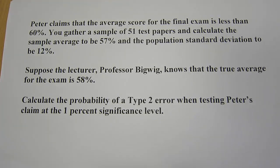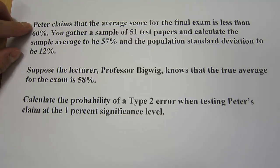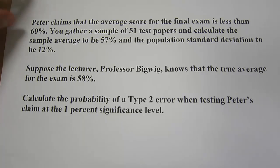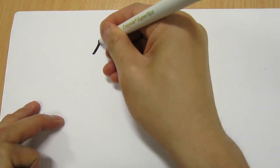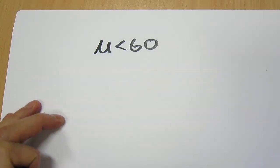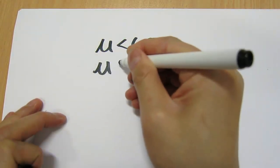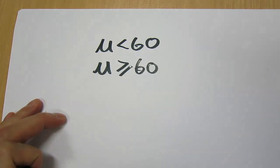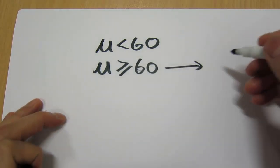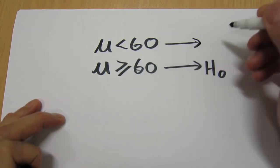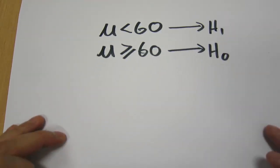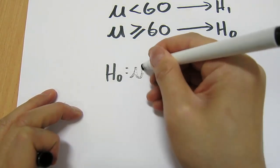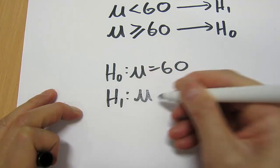It might seem that there's a lot of information here to absorb, but let's break this down into two big steps. The first step is to conduct the actual test. Peter claims that the average score for the final exam is less than 60%. The counterclaim, or the complete opposite, must be that the true average is larger than or equal to 60%. The one with the equal sign is the null hypothesis; the one without must be the alternate hypothesis. So H0: mu equals 60, and H1: mu is less than 60.